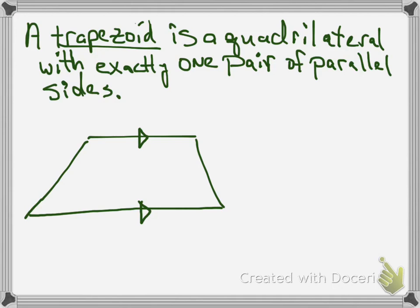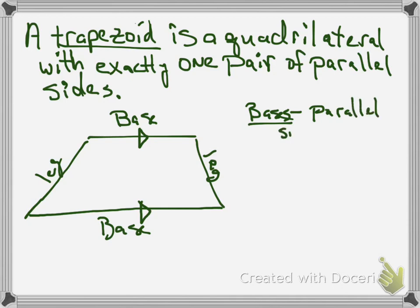Anyways, what do you call the parallel sides? You call those bases. So the bases are the parallel sides. The sides that are not parallel are called your legs. So bases are the parallel sides, and the legs are the non-parallel sides.